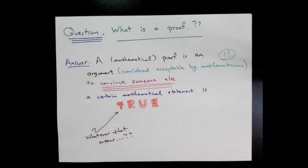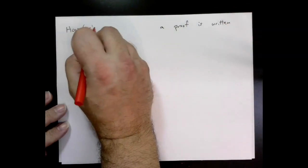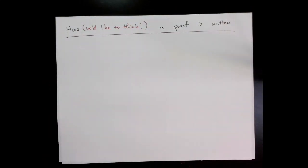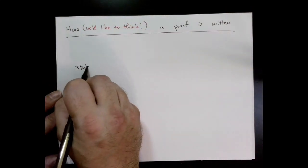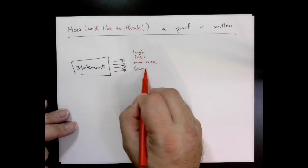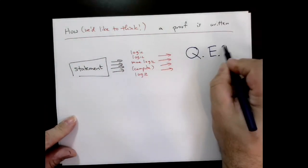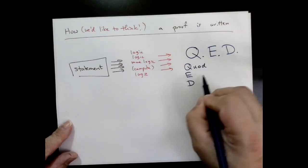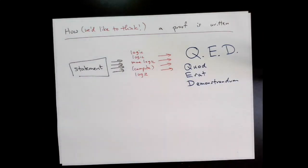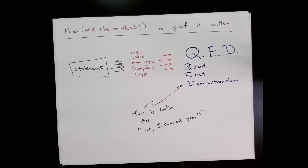Mathematics is absolutely something that is about communication and is about convincing others. Here's how a proof is written, or at least how we'd like to think a proof is written: someone gives us a statement, we look at it, we say I know what to do—logic, logic, and more logic, compute something, and then boom, that's the argument. QED. For the record, QED is what we sometimes write at the end of proofs. It's an acronym that stands for quod erat demonstrandum, which is Latin for 'see, look, I've showed you.'